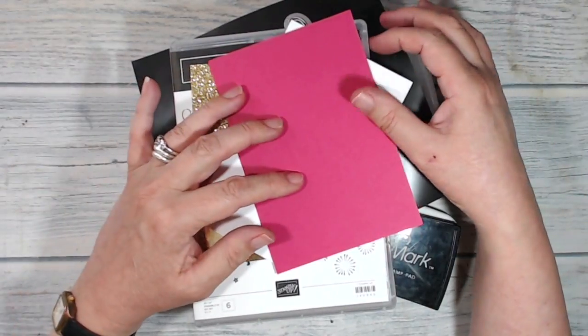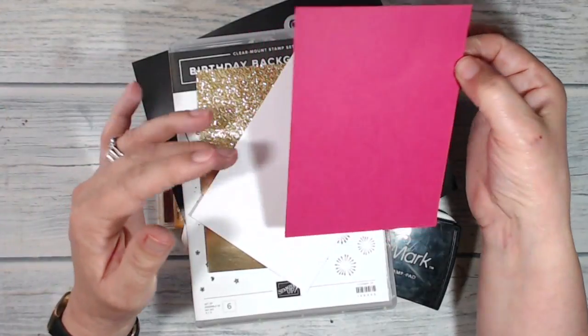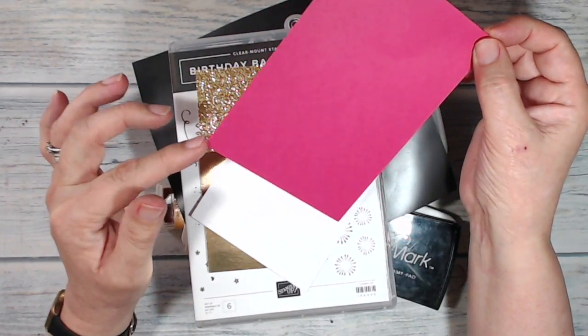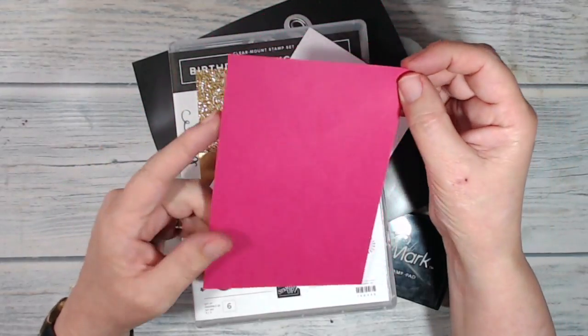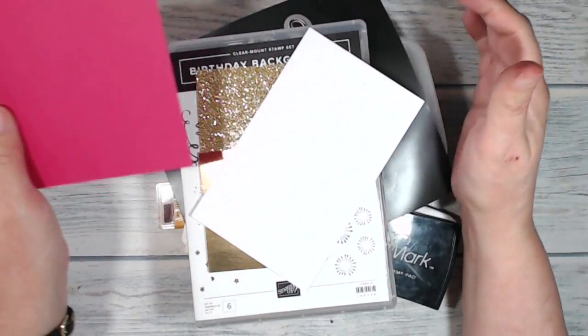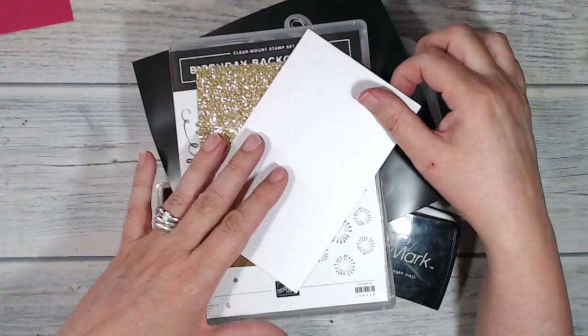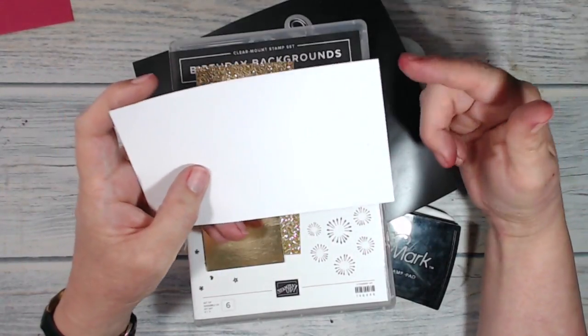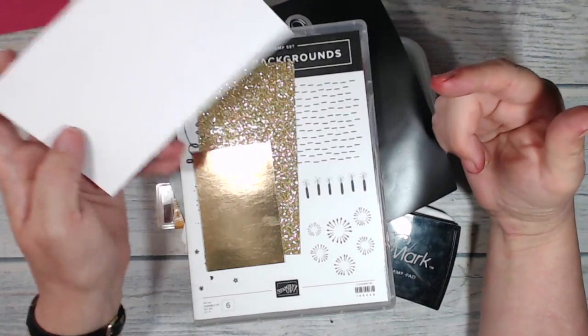These are the things that I'm using today. I'm not going to make a whole card today, I'm just going to make a card front. So I've got a piece of melon mambo and it is five and three quarters by four inches. I'm going to be working on some whisper white and I'm going to cut that to three and three quarters by five and a half.